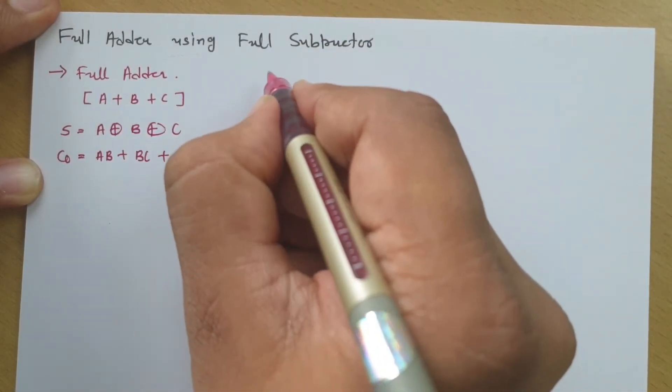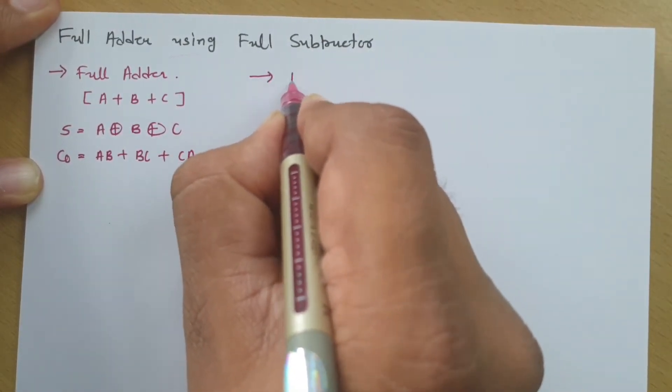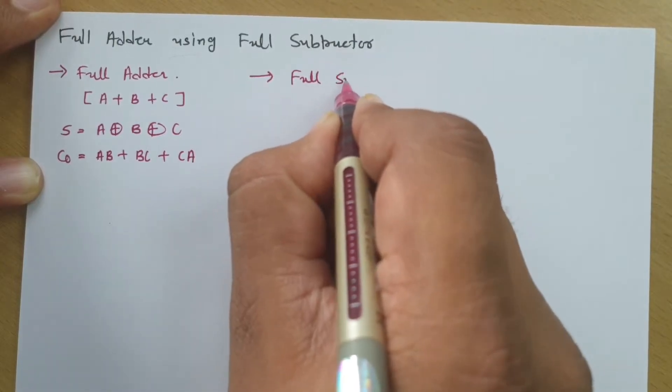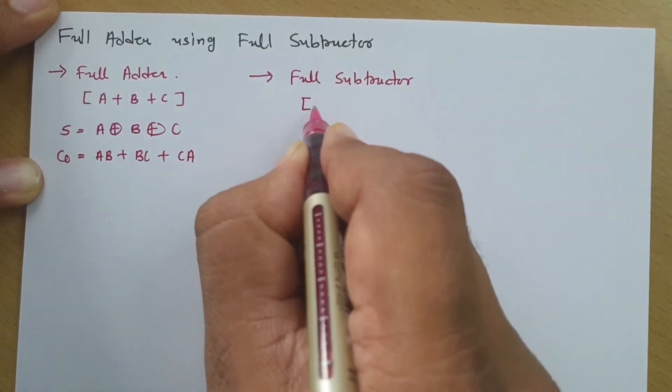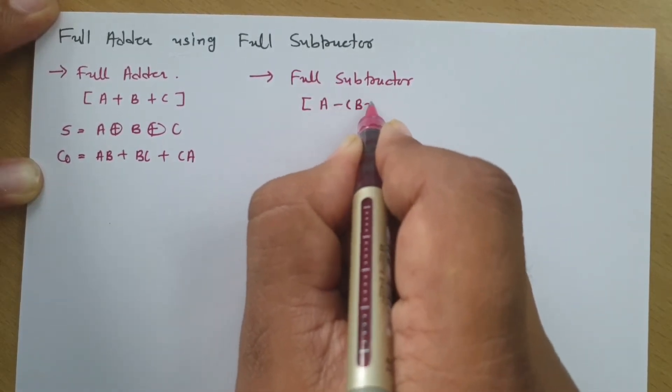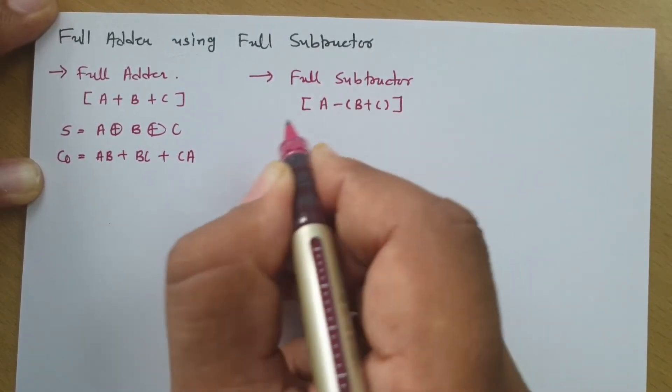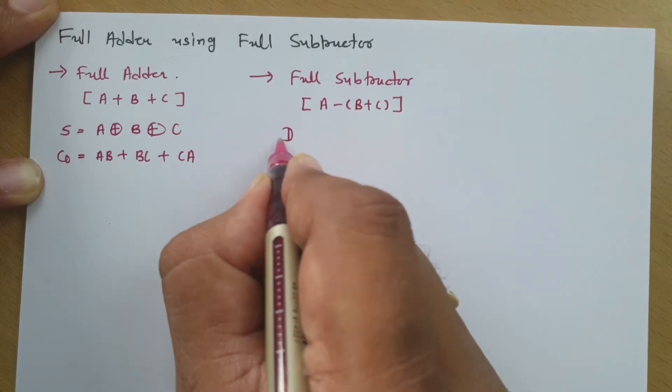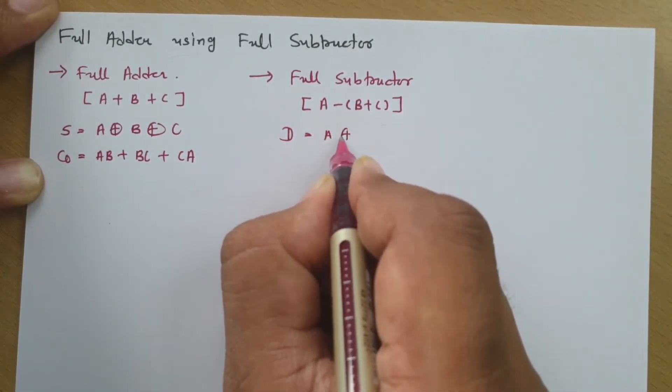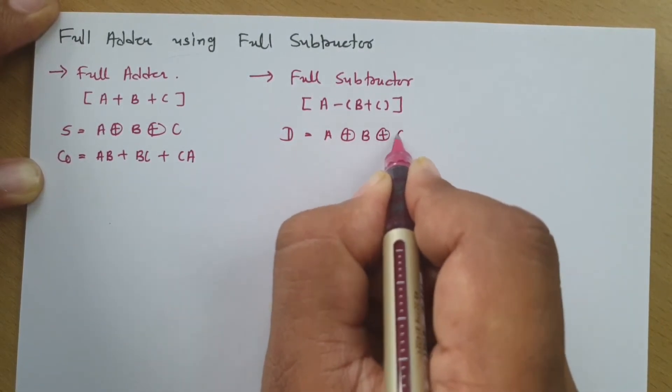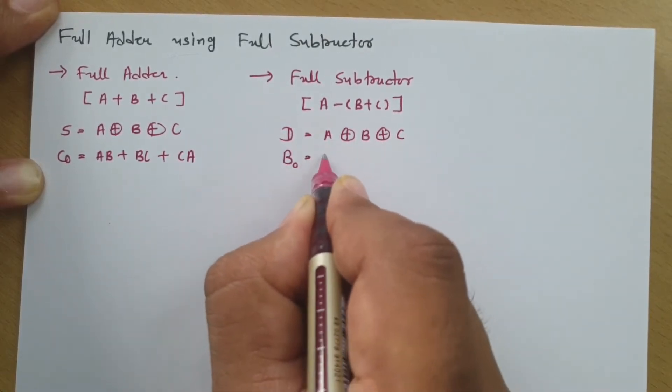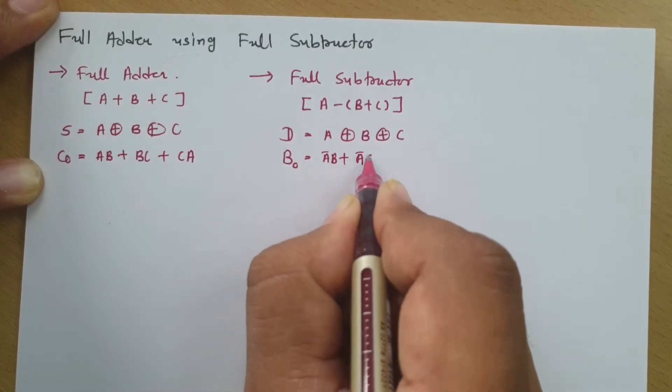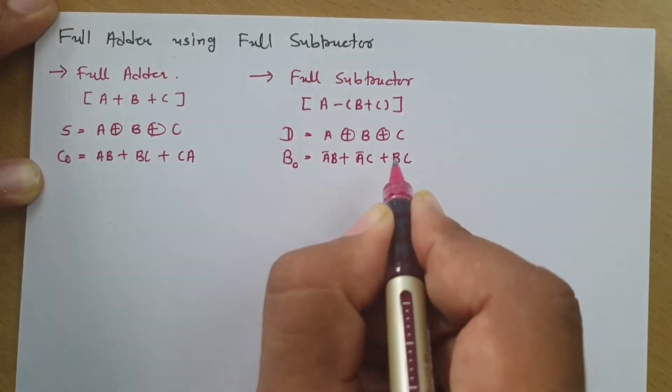And if we talk about full subtractor, then in full subtractor, we perform 3-bit subtraction. So, here if I perform A minus B plus C operation, then difference D that will be A XOR B XOR C and borrow that will be A bar B plus A bar C plus BC.